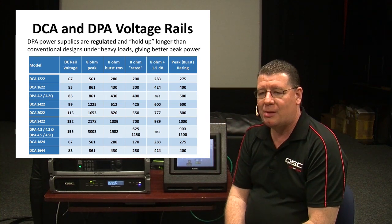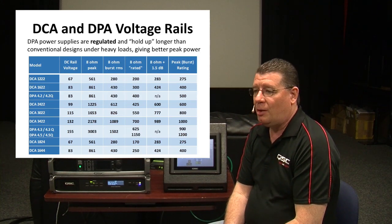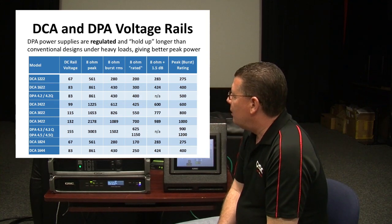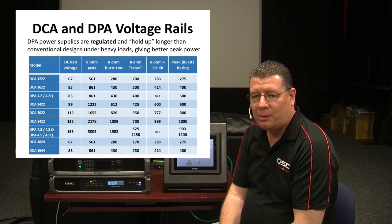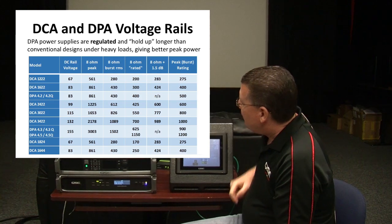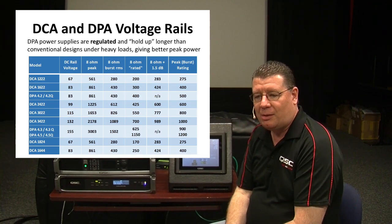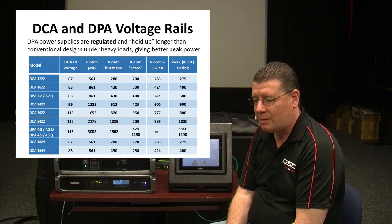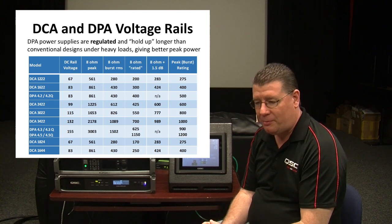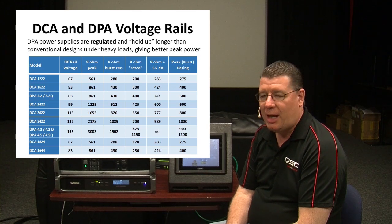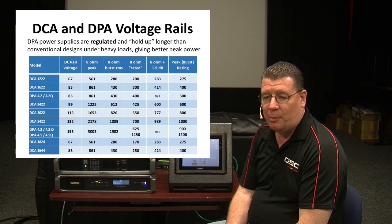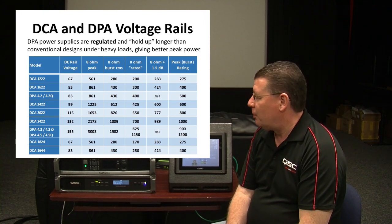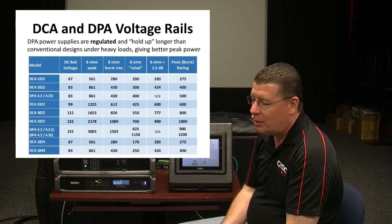The DPA 4.3 and 4.5 have 155-volt rails, so they are capable of dynamic headroom greater than even our largest DCA amplifier. The DPA 4.2 is also at about 83 volts, similar to the DCA 1622. However, the DPA amplifiers have a more sophisticated power supply — the DPA 4.2 has a fully regulated power supply, so the output rails do not change under loading from the amplifier or if the wall voltage sags. This allows them to effectively play louder than one would expect from an unregulated design like the DCAs or most competitive amplifiers.